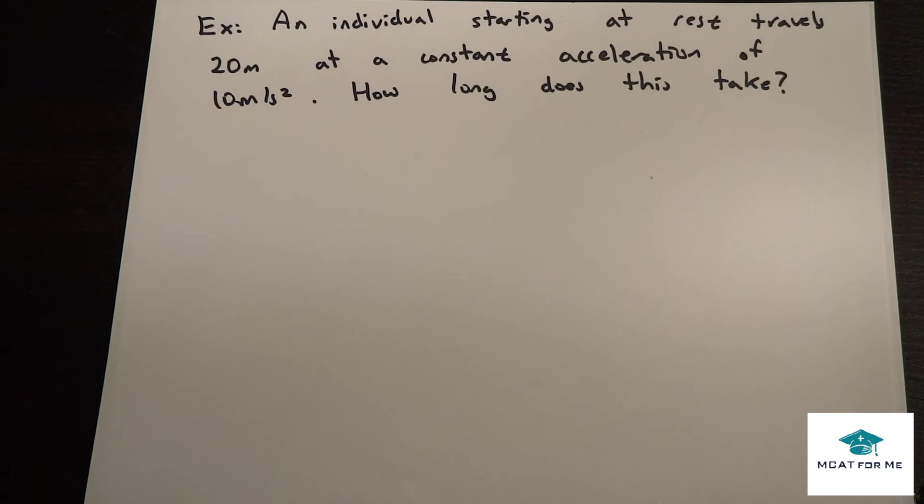And so we'll just start off with an example. An individual starting at rest travels 20 meters at a constant acceleration of 10 meters per second squared. How long does this take?